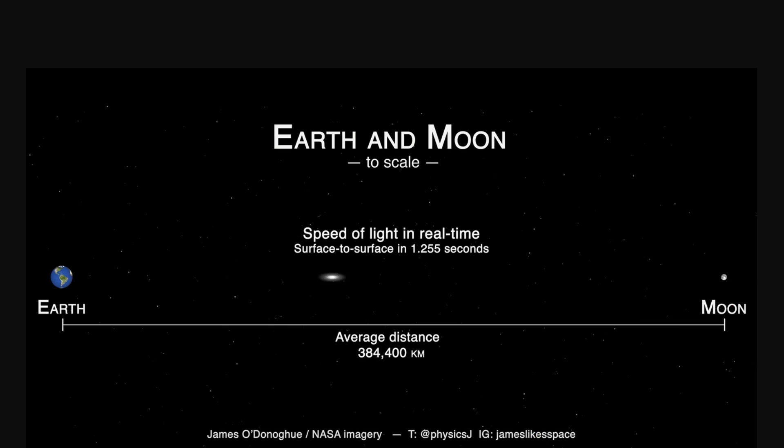And you can kind of see how fast this speed is by looking at this simulation created by James O'Donoghue that helps us visualize how fast the light travels between the earth and the moon.